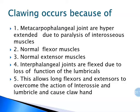The normal flexor muscles and tendons and the normal extensor muscles and tendons are still functioning. The fourth factor is that interphalangeal joints are flexed due to loss of function of lumbricals. All four factors allow the long flexors and extensors to overcome the action of interossei and lumbricals, thus resulting in claw hand.